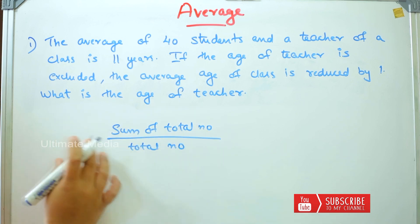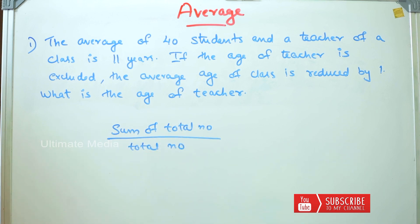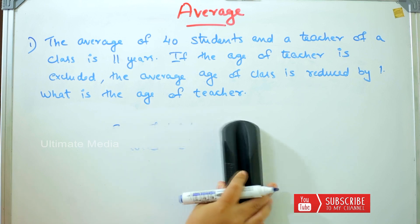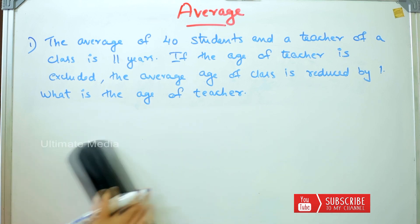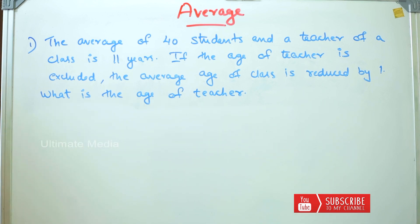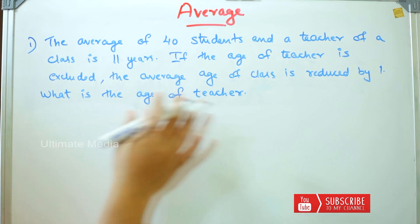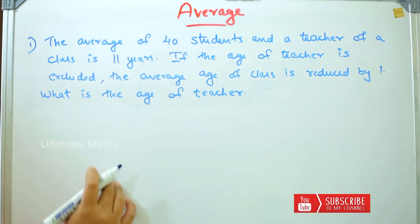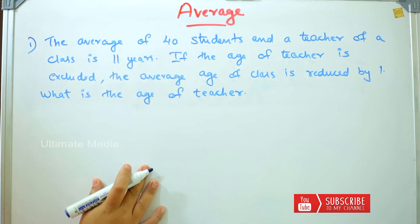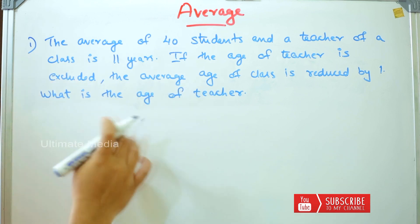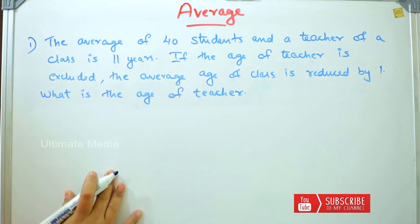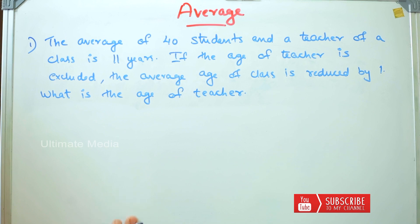That is the sum divided by total number. If you have a question like this — the average of 40 students and a teacher is 11 years — that means we have 41 persons total. If we exclude the teacher's age, the average age is reduced by 1.